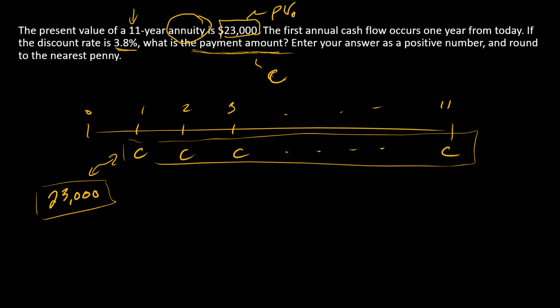The standard annuity formula is going to work here—the present value of an annuity formula—because the first cash flow happens in year 1. We know that the present value of the annuity is equal to the cash flow amount times the annuity factor.